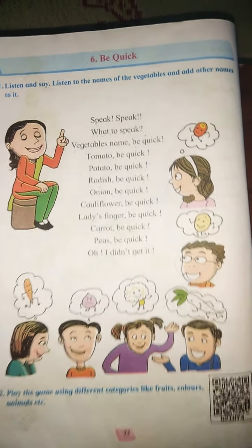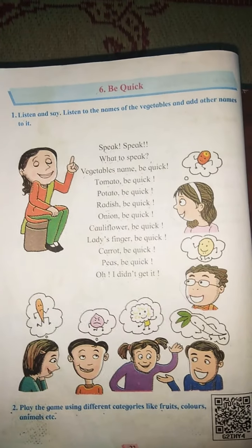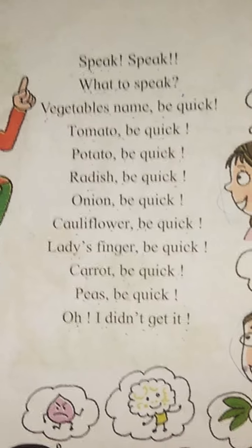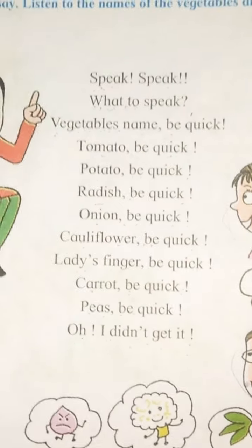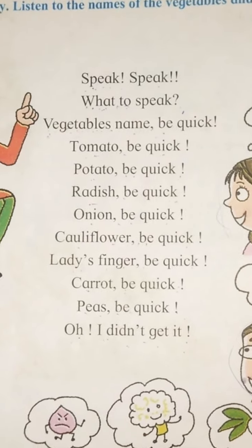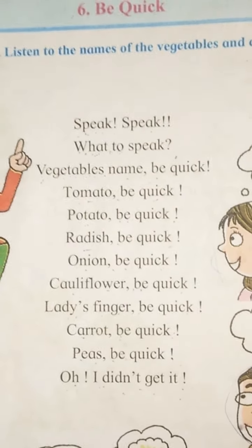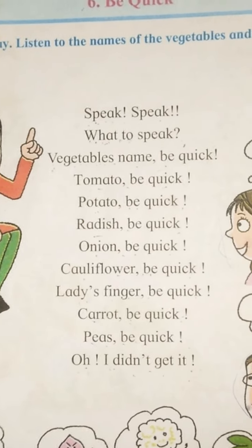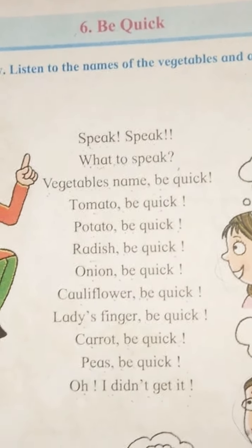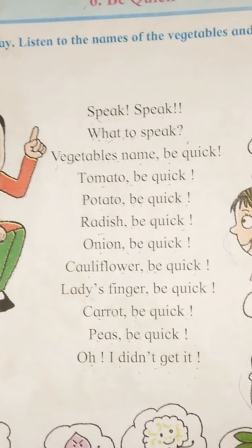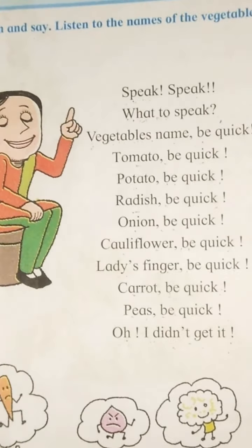Speak, speak. What to speak? Vegetable's name, be quick. Tomato be quick. Potato be quick. Radish be quick. Onion be quick. Cauliflower be quick. Lady's finger be quick. Carrot be quick. Peas be quick. O-ho! I didn't get it. Okay.